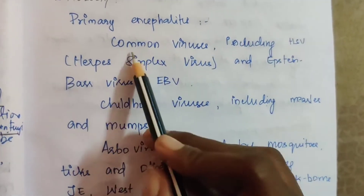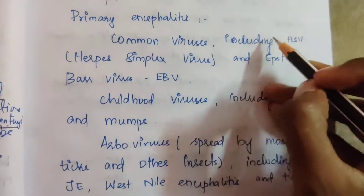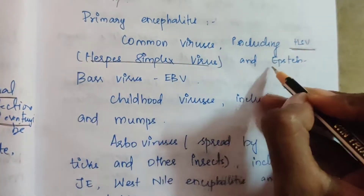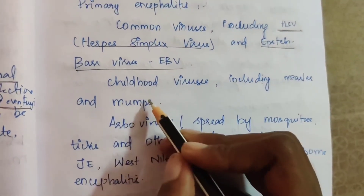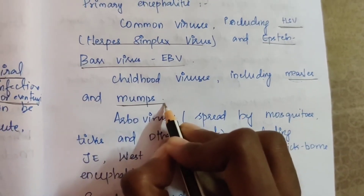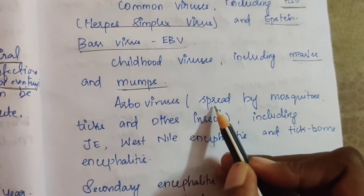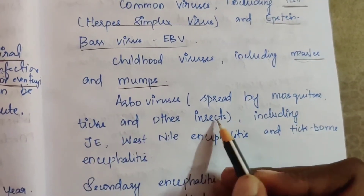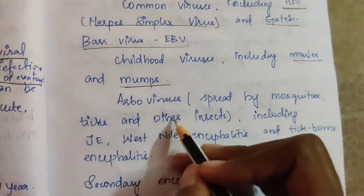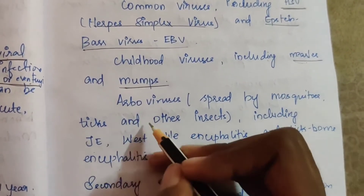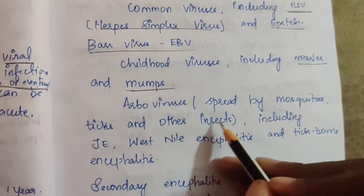Common viruses causing primary encephalitis include herpes simplex virus (HSV) and Epstein-Barr virus. In childhood, mainly measles and mumps can cause encephalitis. Arboviruses, spread by mosquitoes, ticks, and other insects, include Japanese encephalitis, West Nile encephalitis, and tick-borne encephalitis.